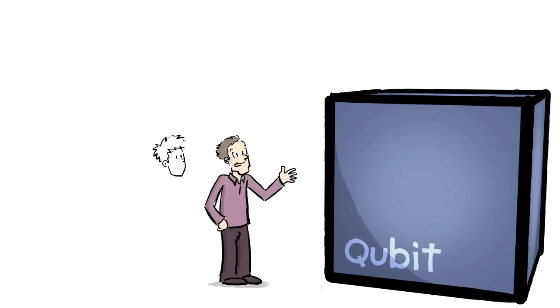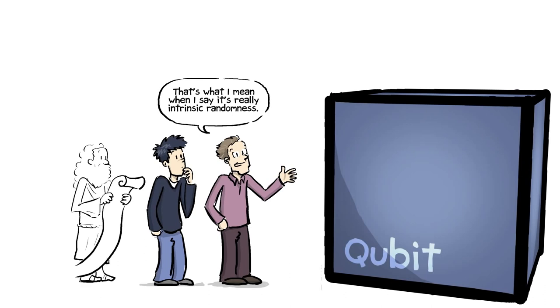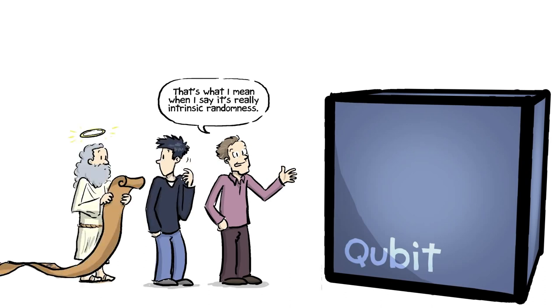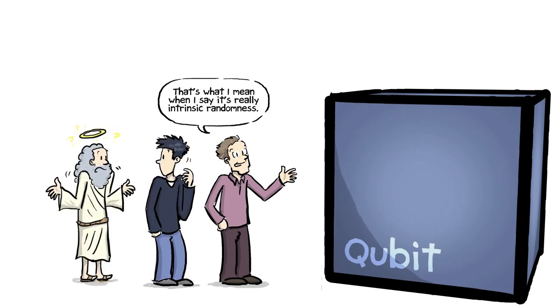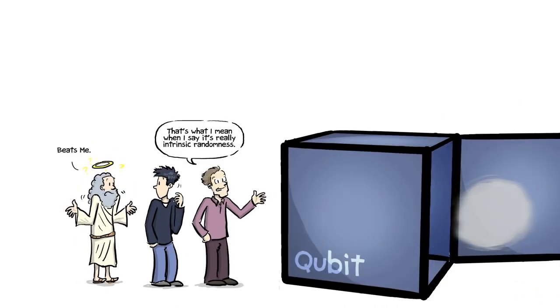That's something really new compared to classical physics. That's what I mean when I say it's really intrinsic randomness. It's not that there's some record somewhere, but you haven't looked at it yet. There's no record. It hasn't been decided yet whether it's going to be a zero or a one.